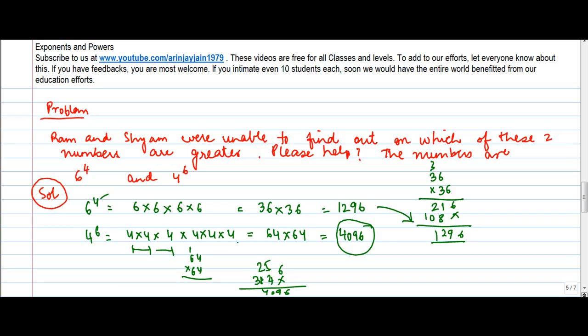Expand the numbers multiplied by themselves whatever is the exponent power, and then do the simple multiplication. Whichever is the greater number — that is what they were unable to solve. So Ram and Shyam should know that 4096 is the greater number.